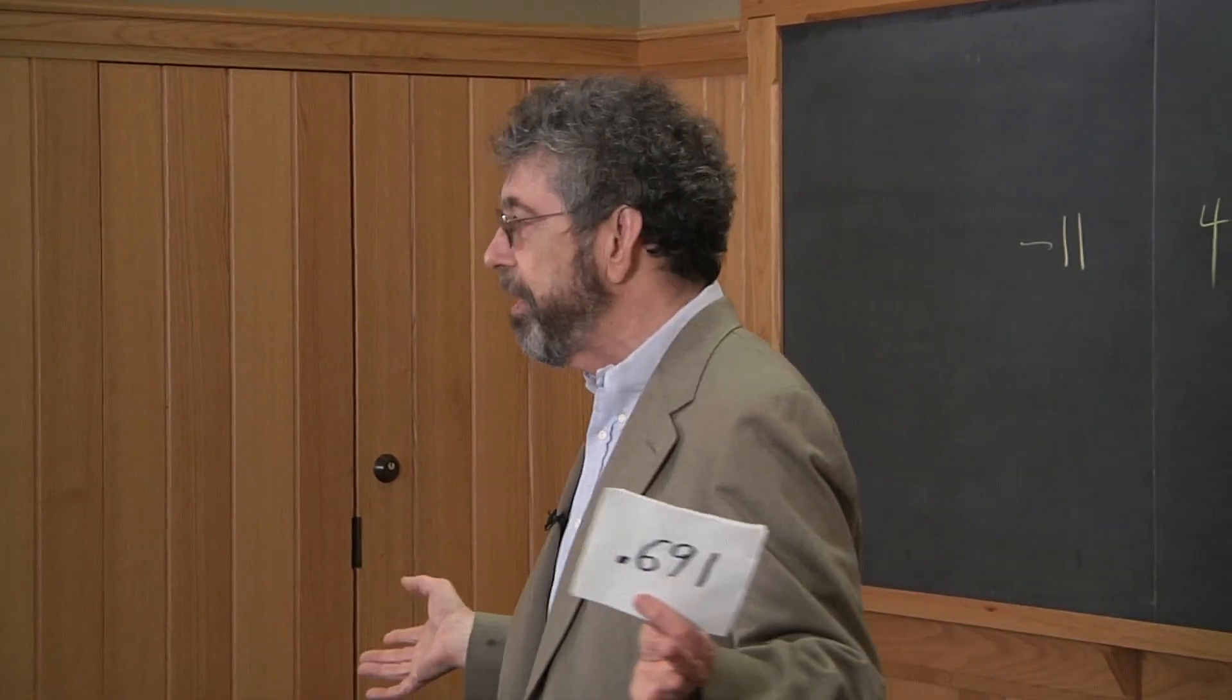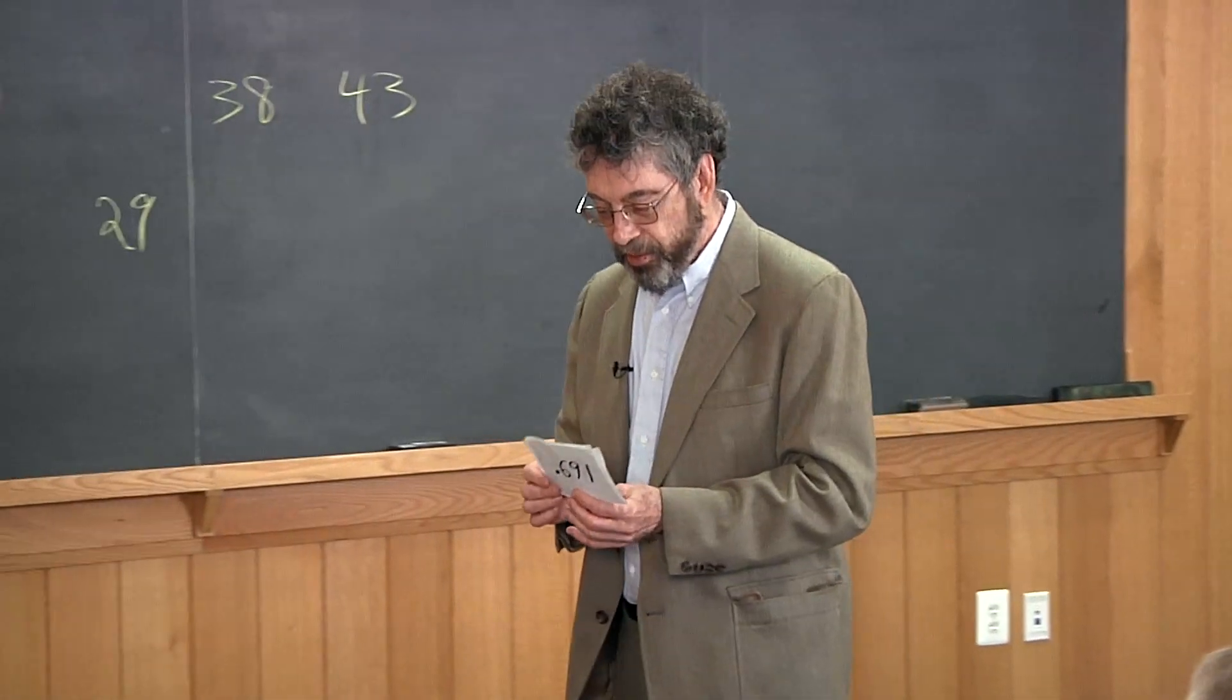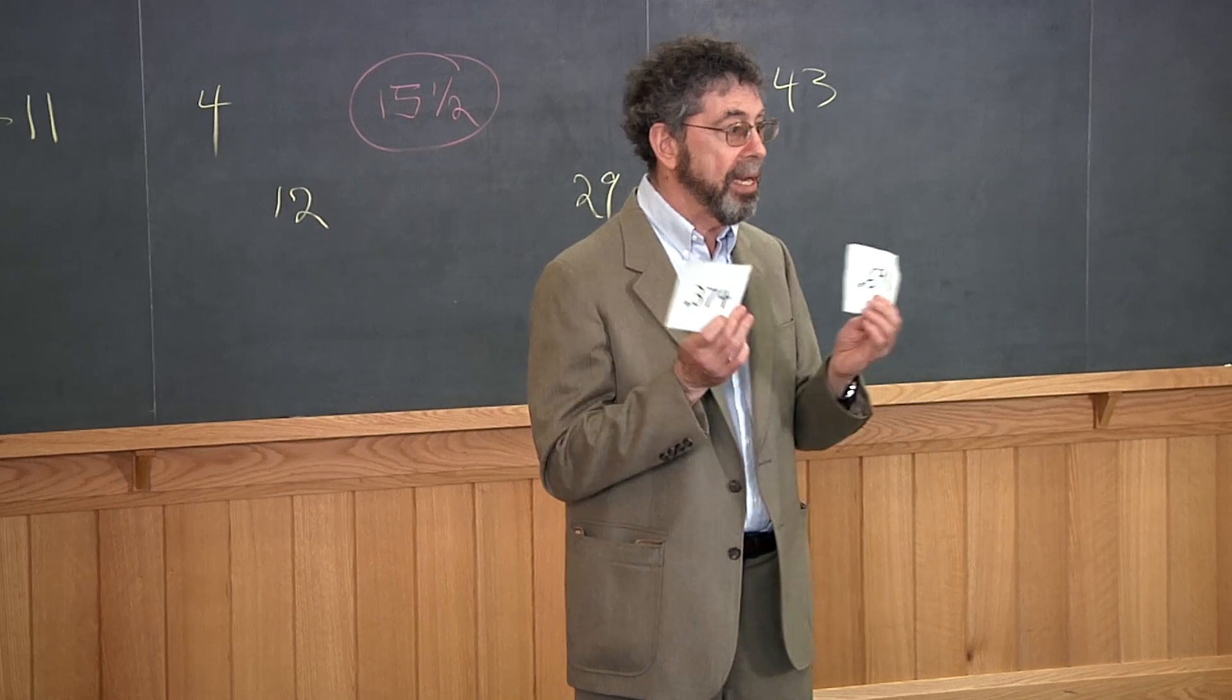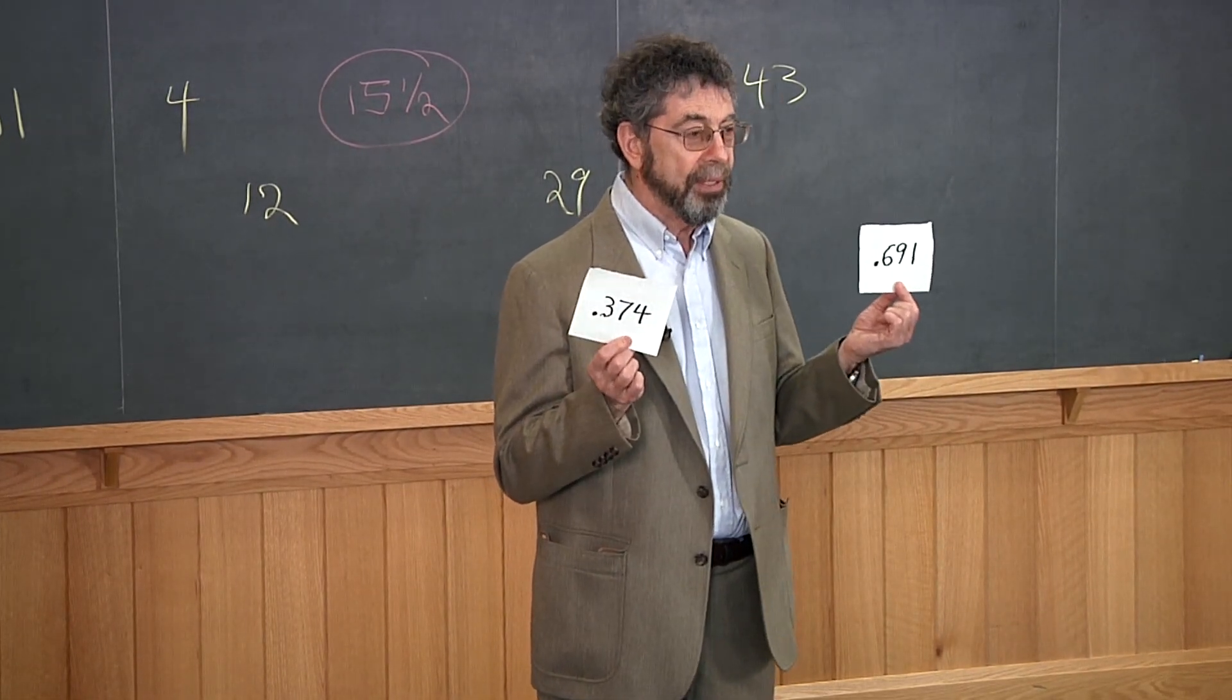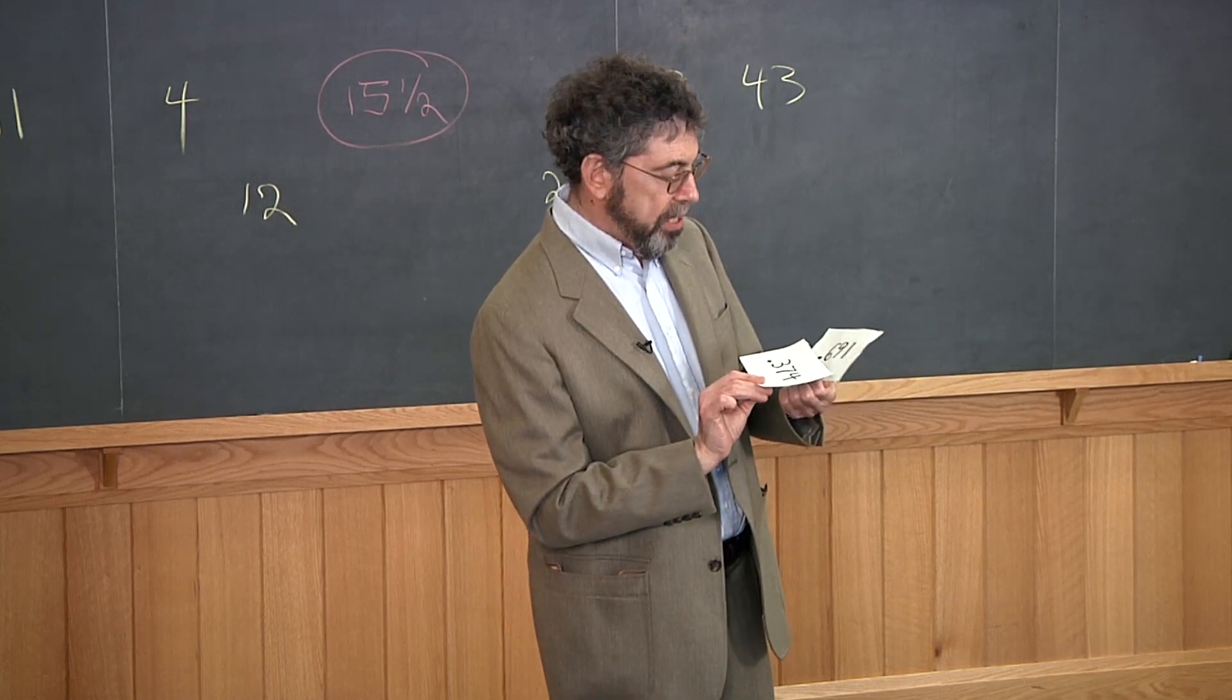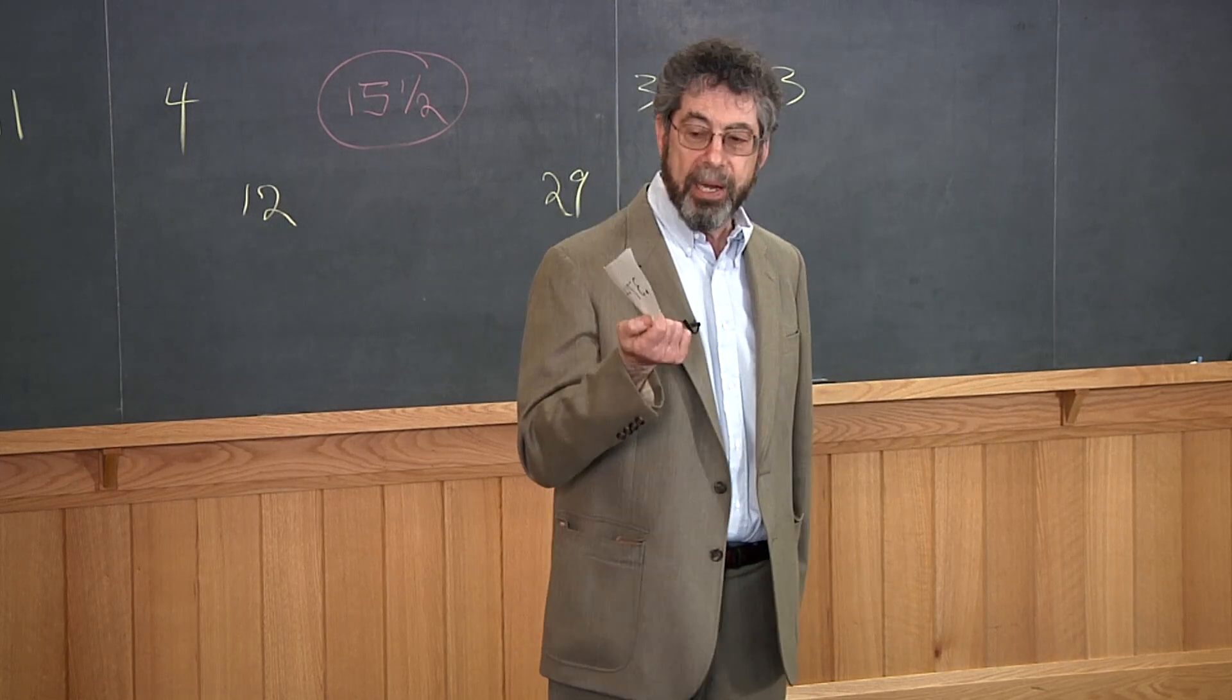And it doesn't matter if she knows that I'm using this strategy. I'll tell you what the strategy is. The strategy is I look at the two numbers that are handed to me by the goddess of chance, and I take the number that's closer to a half and show that number to Catherine. So 0.374 is closer to a half and 0.691, so that's why I showed her 0.374.